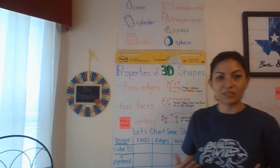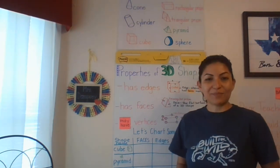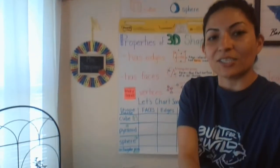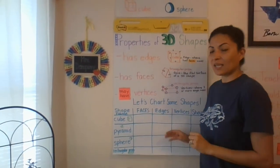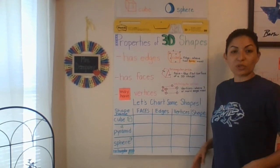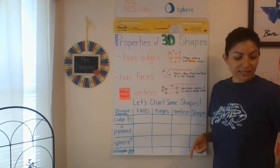So remember how I told you that you're going to figure out what shape doesn't have a vertices? Well, this is how you're going to do it. Attached to this opportunity is a chart that looks like this that you can print out or you can take a picture and work on in Seesaw.